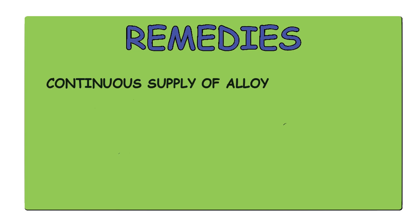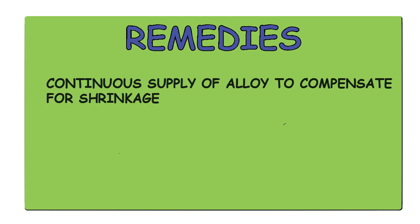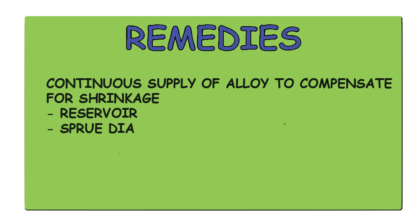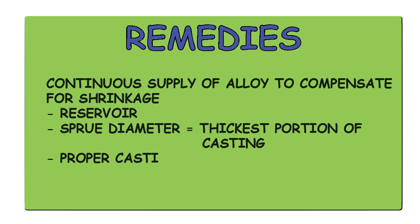To prevent localized shrinkage porosities, we must ensure a continuous supply of molten alloy to compensate for casting shrinkage. We can add a reservoir with base metal alloys, and we can flare the sprue at the point of attachment to the casting with gold metal alloys. Both of these provide extra metal at the time of shrinkage. We can also reduce localized shrinkage porosity by increasing the sprue diameter — the recommended sprue thickness is equal to the thickest portion of the casting — and by following proper casting temperature.